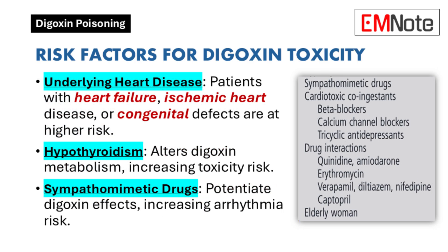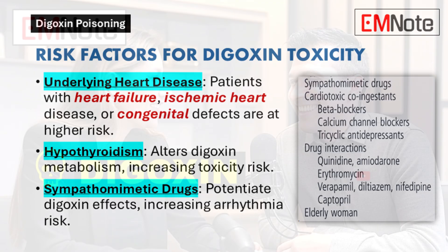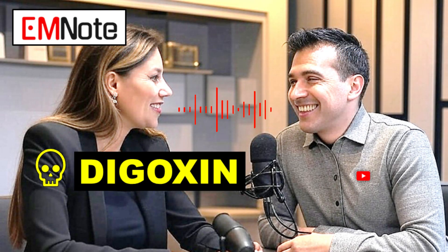Patients with underlying heart disease are more susceptible to digoxin toxicity, especially those with severe or decompensated heart failure. Additionally, hypothyroidism may alter digoxin metabolism, and concomitant use of sympathomimetic drugs like epinephrine can potentiate digoxin's effects and increase arrhythmia risk. This highlights the importance of careful patient selection and close monitoring when prescribing digoxin.